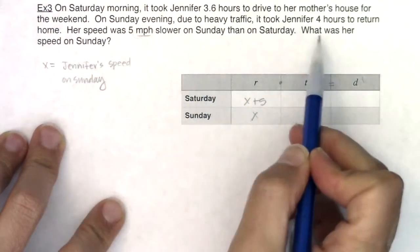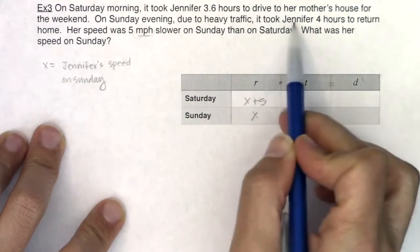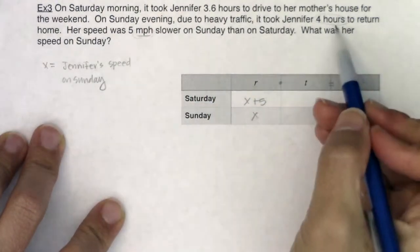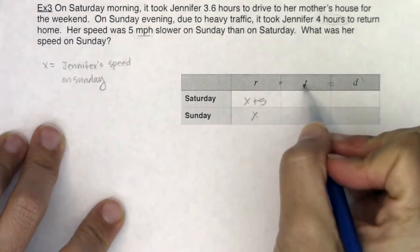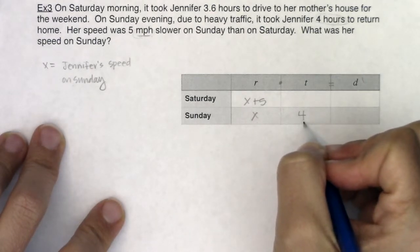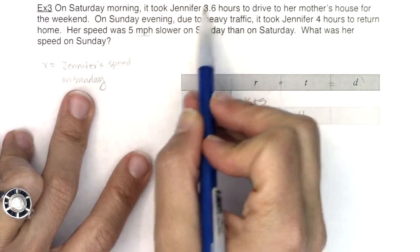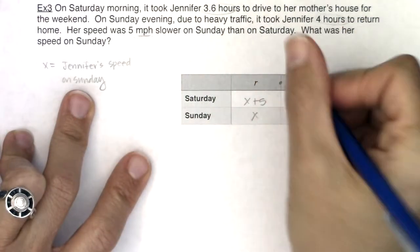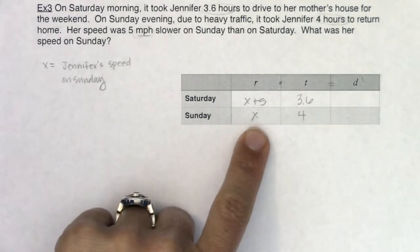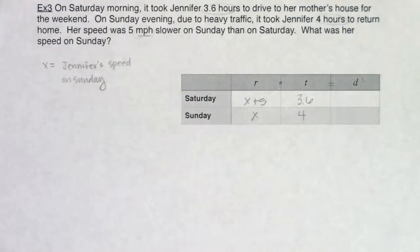Going back to the problem: on Sunday evening it took Jennifer 4 hours to return home. Hours is a time, so I plug 4 into the Sunday time cell. The first sentence said it took Jennifer 3.6 hours on Saturday morning — also a time — so I put 3.6 in the Saturday time cell. So I've got my variable, I know Saturday's rate was 5 mph faster, it took 4 hours Sunday and only 3.6 hours Saturday.